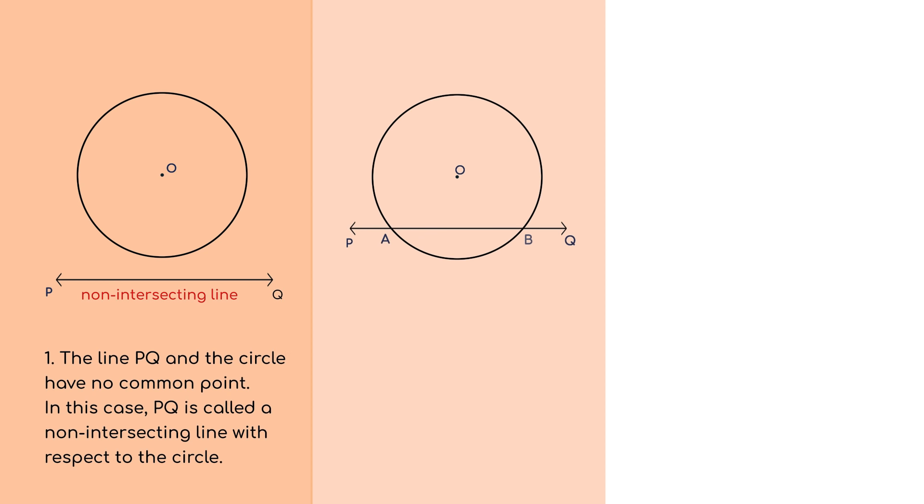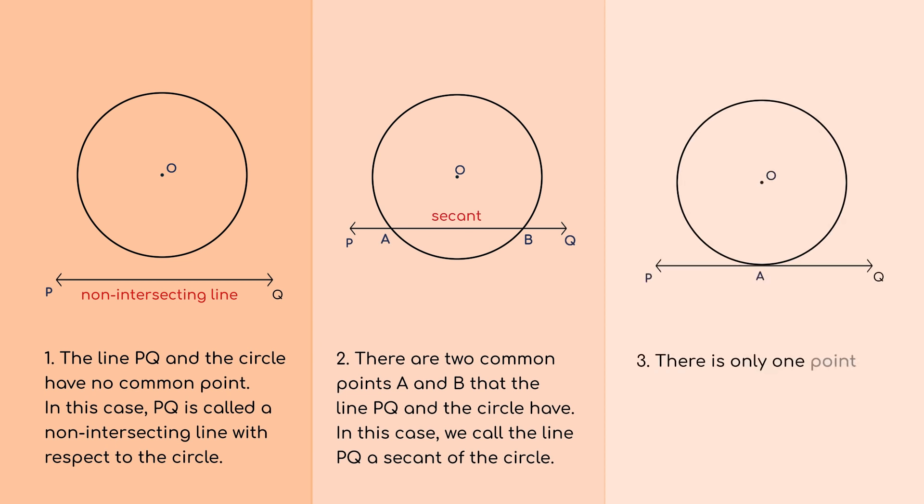2. There are two common points A and B that the line PQ and the circle have. In this case, we call the line PQ a secant of the circle. 3. There is only one point A which is common to the line PQ and the circle. In this case, the line is called a tangent to the circle.